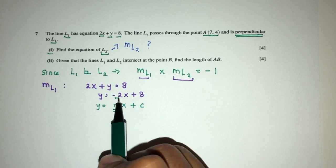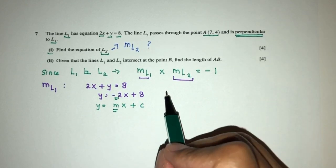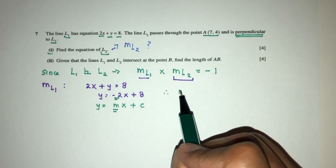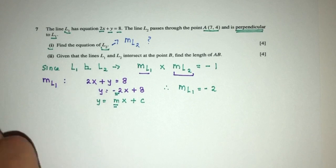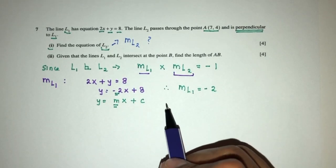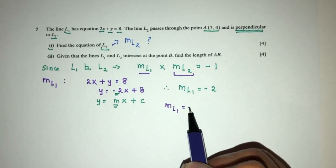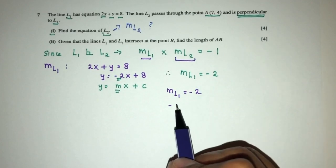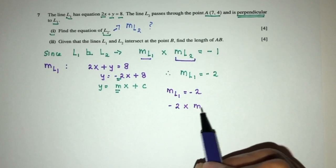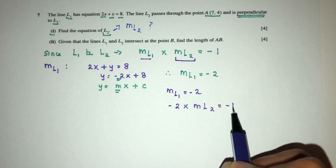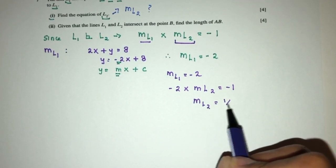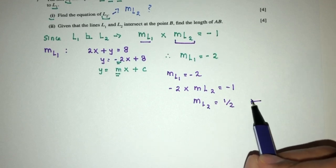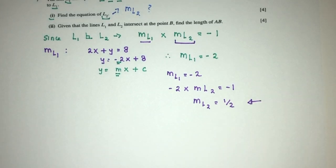The value here will be the gradient, right? So we know this. Conclusion is the gradient of L1 has to be minus 2. Now replace back in the main equation. So m of L1 is minus 2, so minus 2 times gradient of L2 has to give you minus 1. So the gradient of L2 has to be the value of half.